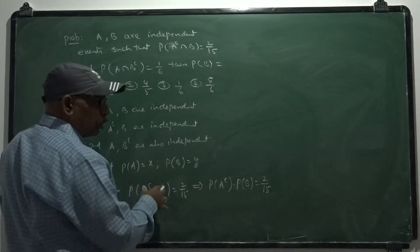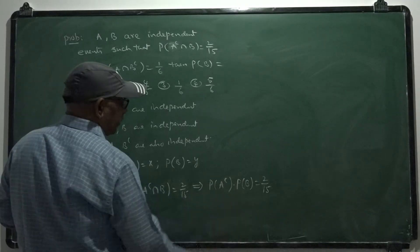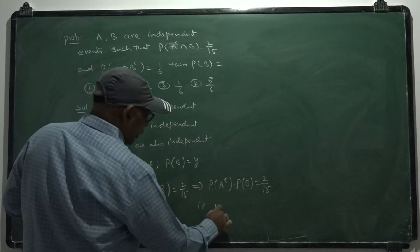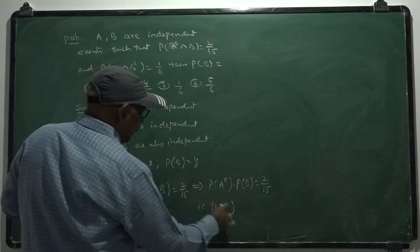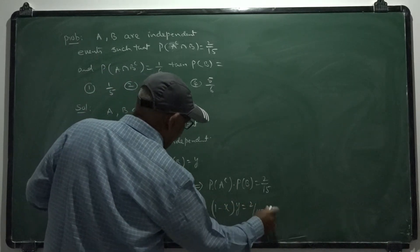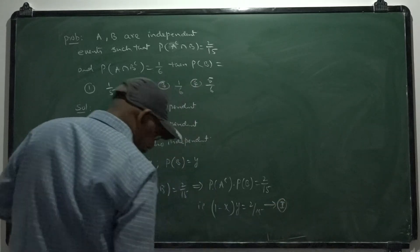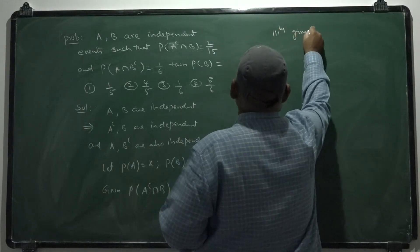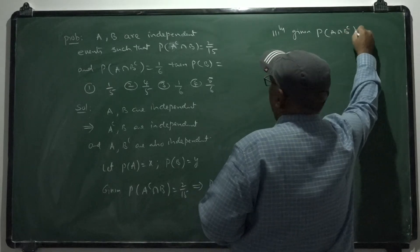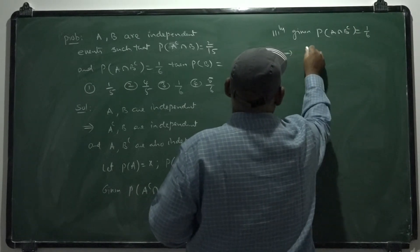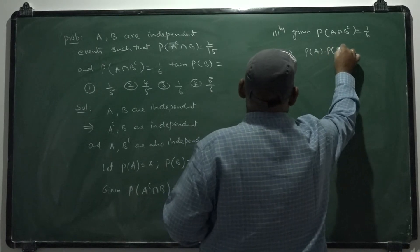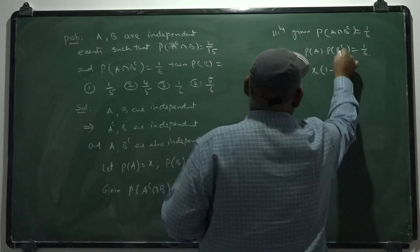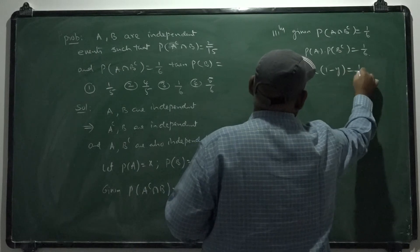Since they are independent, the intersection probability is the product of their individual probabilities by definition. So probability of A complement is 1 minus X, times probability of B which is Y, equals 2 by 15 — call this equation 1. Similarly, probability of A intersection B complement equals 1 by 6, which gives X times 1 minus Y equals 1 by 6 — call this equation 2.